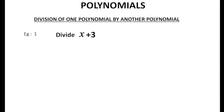Divide x plus 3x squared minus 1 by 1 plus x. First, let's check whether the dividend and divisor are in standard form or not. Here, the dividend is x plus 3x squared minus 1 and the divisor is 1 plus x.